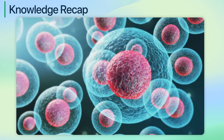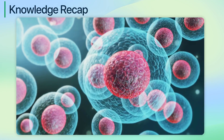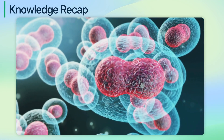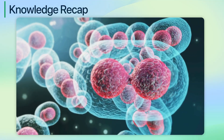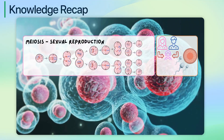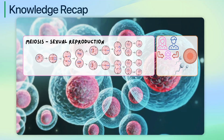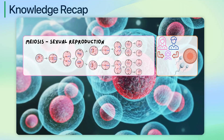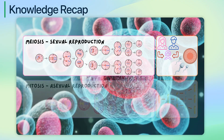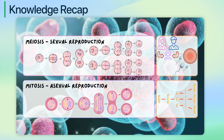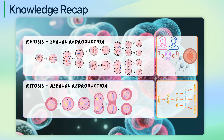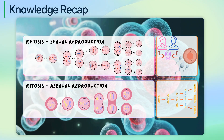So far, you have learned what sexual and asexual reproduction are, including the basic processes involved in each. Sexual reproduction involves the fusion of gametes from two parents, leading to genetic variation, while asexual reproduction involves a single parent producing offspring genetically identical to itself.